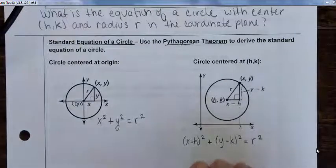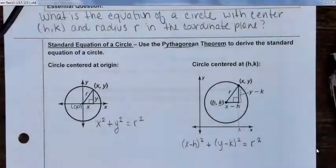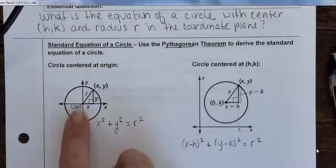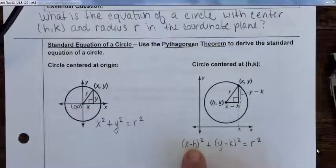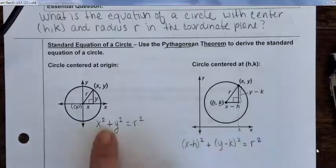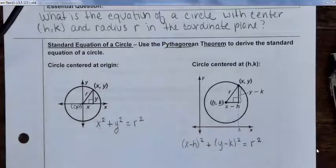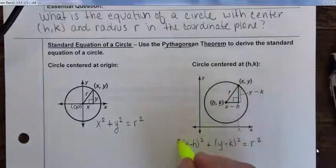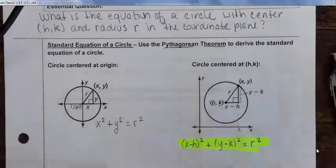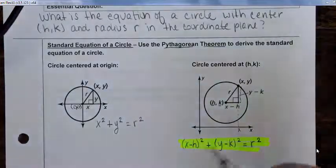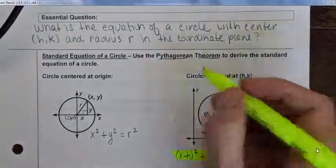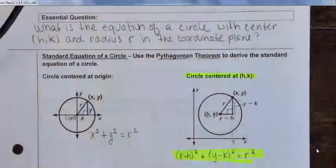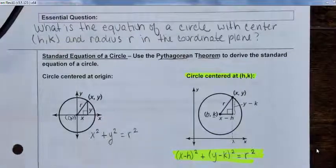Using the Pythagorean Theorem, we now get (x - h)² + (y - k)² = r². This is the standard equation for any circle centered anywhere in the coordinate plane — this is the one you need to remember. It even applies to a circle centered at the origin, because plugging in 0 for h and 0 for k gives us x² + y² = r². Circle centered at (h, k), where h is some x-value and k is some y-value.